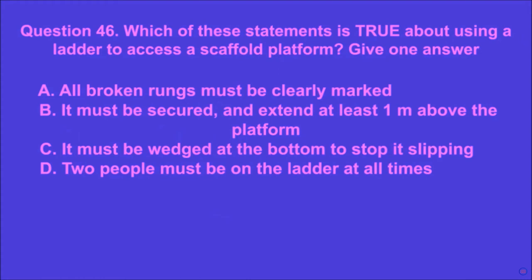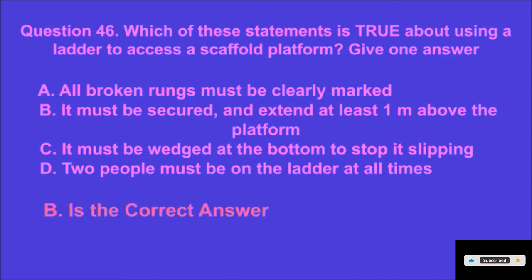Question 46: Which of these statements is true about using a ladder to access a scaffold platform? Give one answer. A: all broken rungs must be clearly marked, B: it must be secured and extend at least one meter above the platform, C: it must be wedged at the bottom to stop it slipping, D: two people must be on the ladder at all times. B is the correct answer.